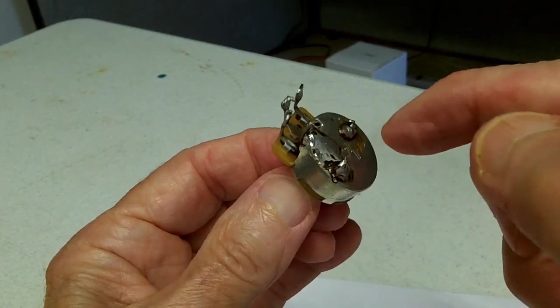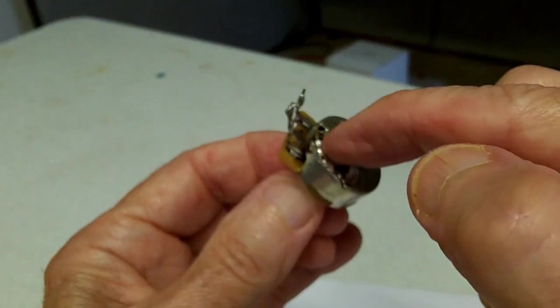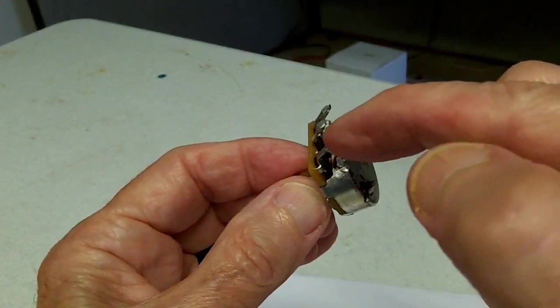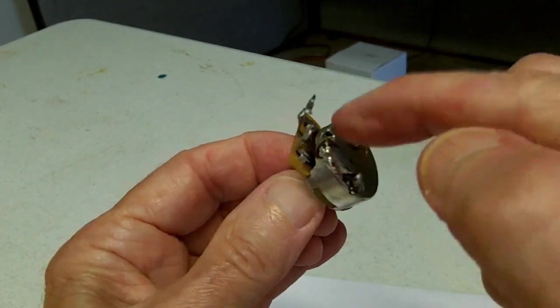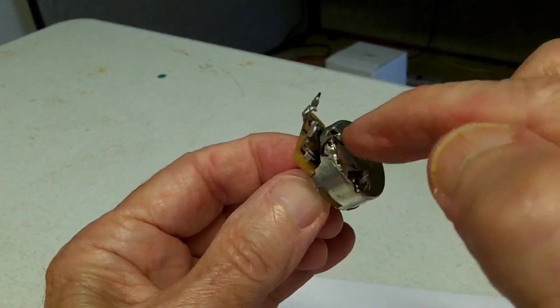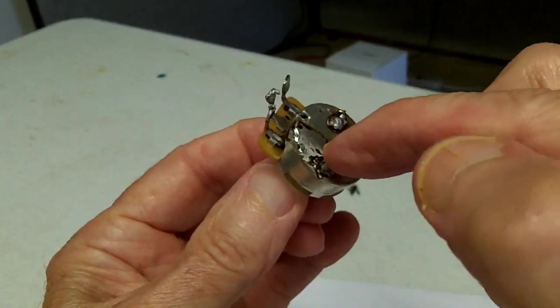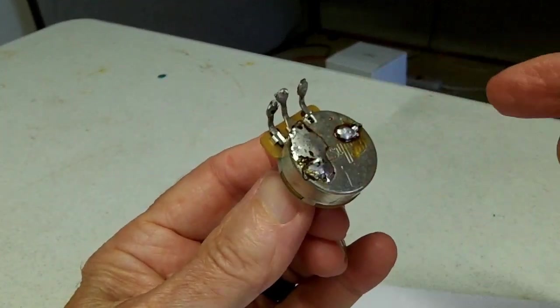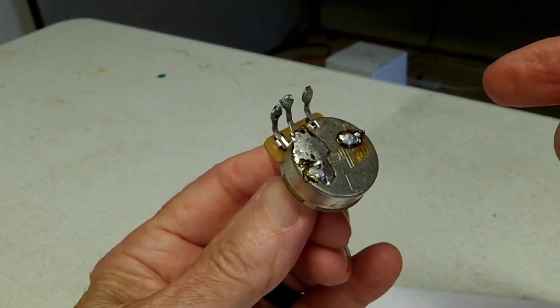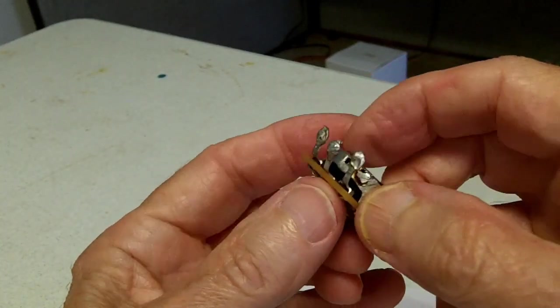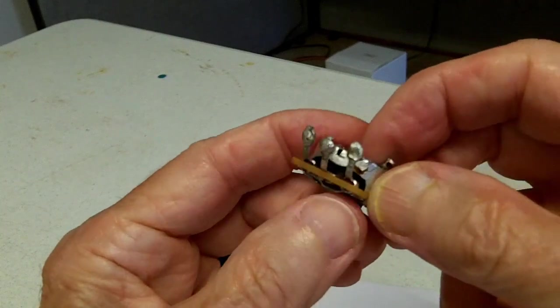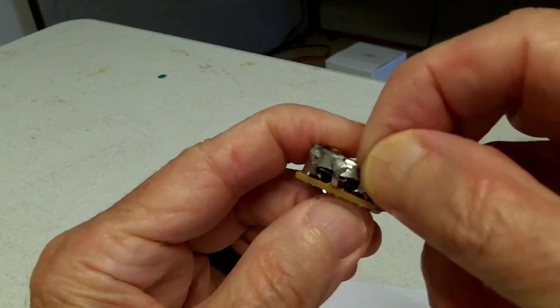That's done just to provide a grounding point. Since in the circuit this lead on the potentiometer goes to ground, you just bend it up and solder it to the pot housing, and then some other leads are soldered onto the potentiometer also to make it a common point.